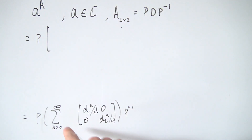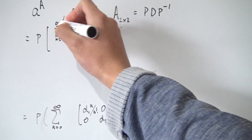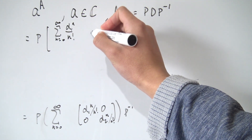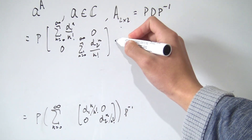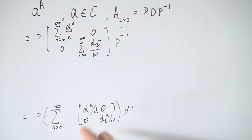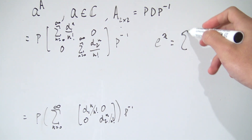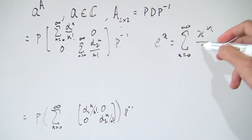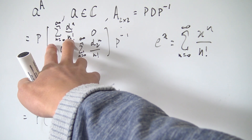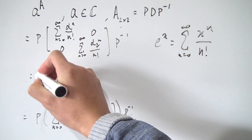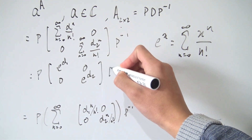Moving the sum inside the matrix gives us a diagonal matrix whose entries are the sum from n equals 0 to infinity of d1 to the n over n factorial and d2 to the n over n factorial respectively. These two sums are exactly the Maclaurin series of e to the x evaluated at d1 and d2.